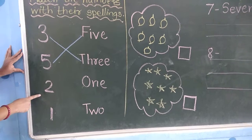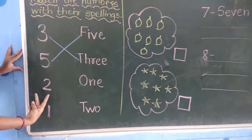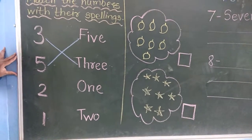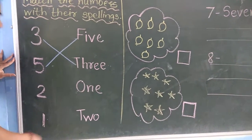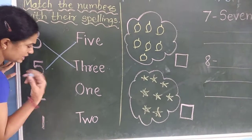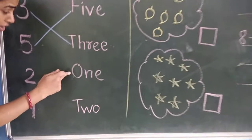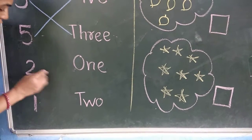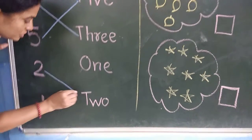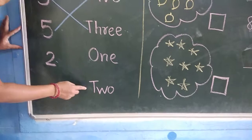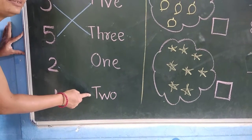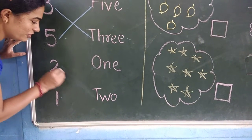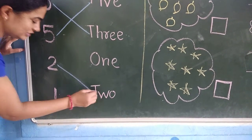See the next number — 2. What is the spelling of number 2? T-W-O. Where is the spelling of number 2? Here is the spelling of number 2. So we will match the name.